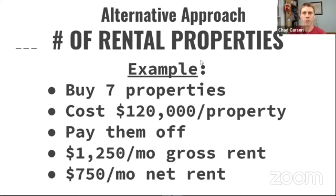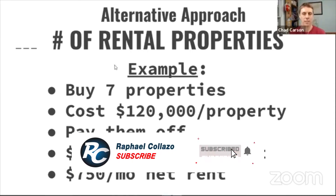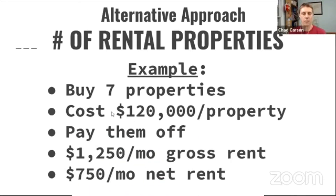Even if you have no rental properties right now, your goal over the next two or three years would be to buy seven properties. Let's say the average cost of each was $120,000 — covering all expenses including the purchase price, closing costs, repairs, and everything else.